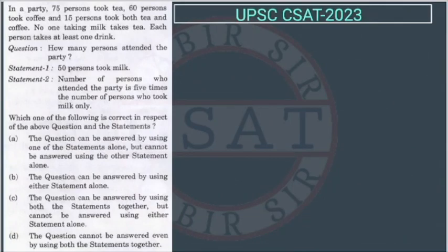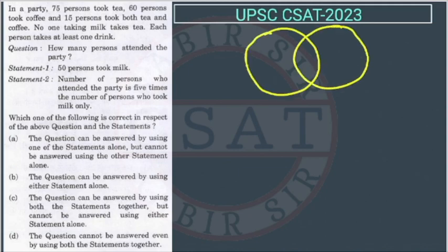This is a question from Venn diagram. In a party, 75% took tea, 60% took coffee, and 15% took both tea and coffee. We will draw circles for each: this circle is for tea, so this is 75; this circle is for coffee, so 60 took coffee; and 15 will come in the overlapping region — those who took both tea and coffee.